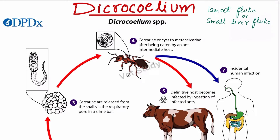Hey, welcome to YouTube. I am Aniket and you are watching Webstudy. Today we will discuss about the parasite Dicrocoeliium, mainly the species Dicrocoeliium dendriticum. The common name of this parasite is the lancet fluke or the small liver fluke. This common name is very important and can be asked in your exam.